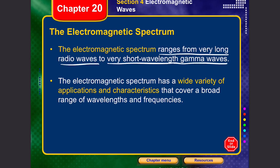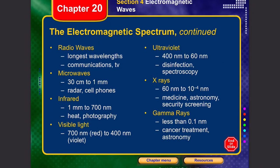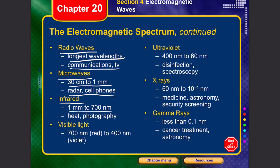The electromagnetic spectrum ranges from very long radio waves to very short wavelength gamma waves. Going from highest wavelength to lowest frequency: radio waves have the highest wavelength and lowest frequency and are used for communications and television; microwaves range from 30 centimeters to 1 millimeter and are used for radars and cell phones; infrared radiation ranges from 1 millimeter to 700 nanometers and is used for heat and photography; visible light ranges from 700 to 400 nanometers — violet, indigo, blue, green, yellow, orange, and red.